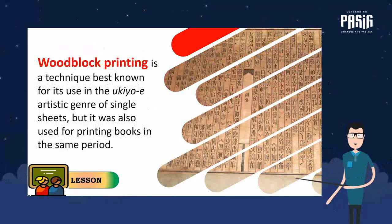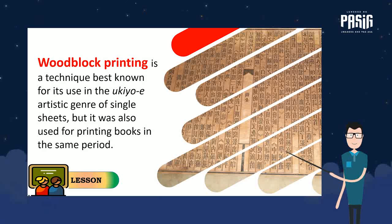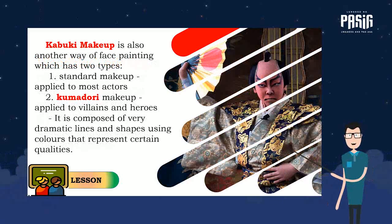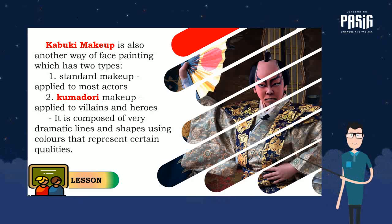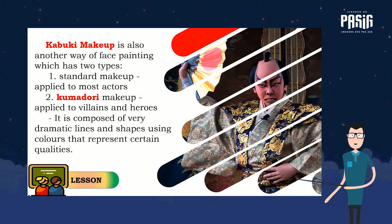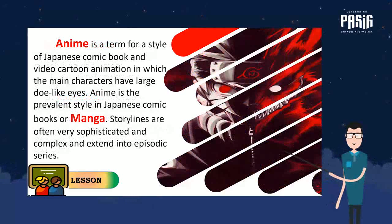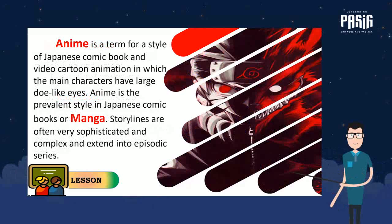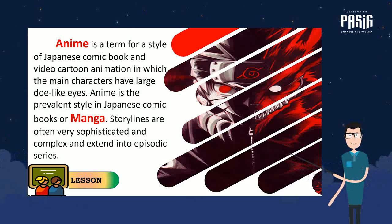Woodblock printing is a technique best known for its use in the ukiyo-e artistic genre of single sheets, but it was also used for printing books in the same period. Kabuki makeup is another form of face painting which has two types: standard makeup applied to most actors, and Kumadori makeup applied to villains and heroes. It is composed of very dramatic lines and shapes using colors that represent certain qualities. Anime is a term for a style of Japanese comic book and video cartoon animation in which the main characters have large doll-like eyes, and is the prevalent style in Japanese comic books, or manga. Storylines are often very sophisticated and complex and extend into episodic series.